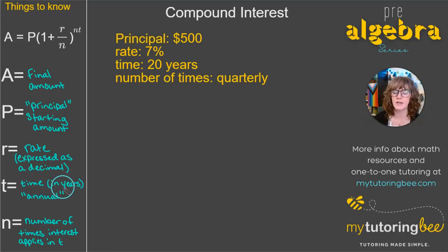T is our time, typically in years, so a lot of times we'll see the word annual or paid annually, things like that, so that is meaning in years. And N is the number of times that interest applies in T. So let's say that we have a situation where it compounds monthly. In a year, there are 12 months. So you would want to use N as 12 in that case.